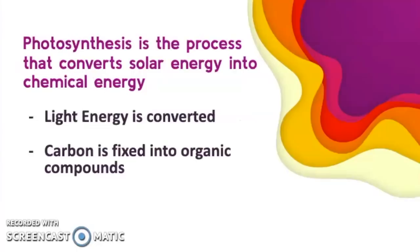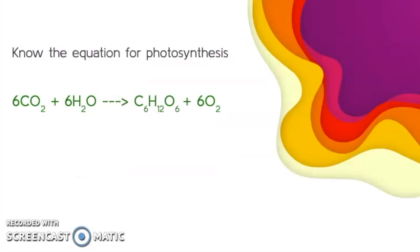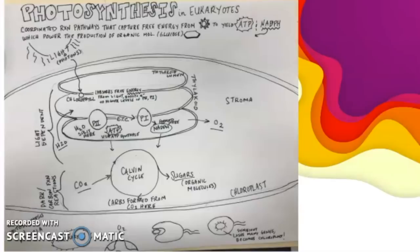Photosynthesis is the process that converts solar energy into chemical energy. Light energy is converted from photons into the energy that we need, and carbon is fixed into organic compounds that the cell can later use in cellular respiration. You might want to review the steps, and here's the equation for photosynthesis. If you are good at drawing, this is an example of my sketch. It might be good to sketch out the steps of things like cellular respiration and photosynthesis. I found that that is a really good study tool.